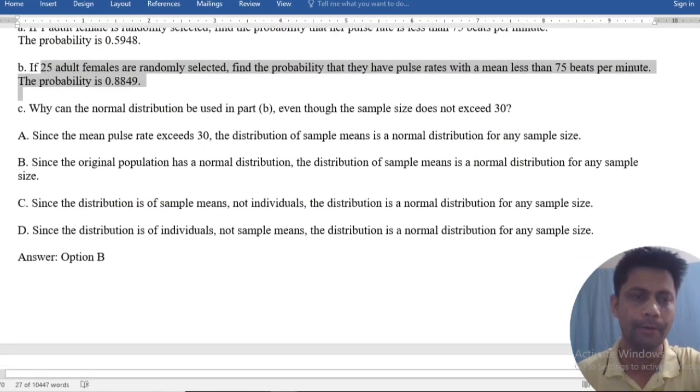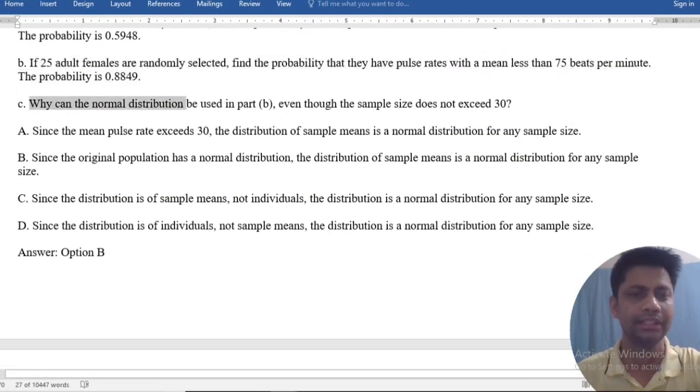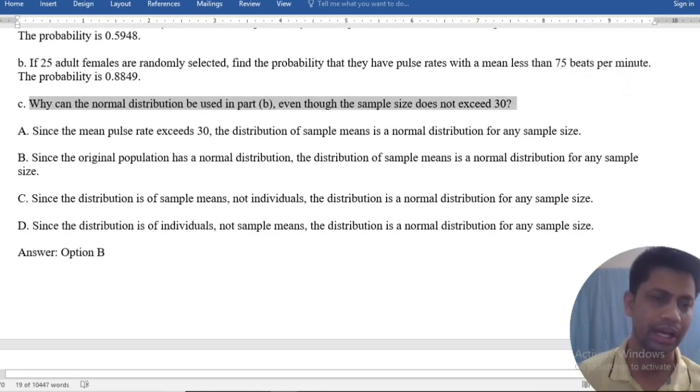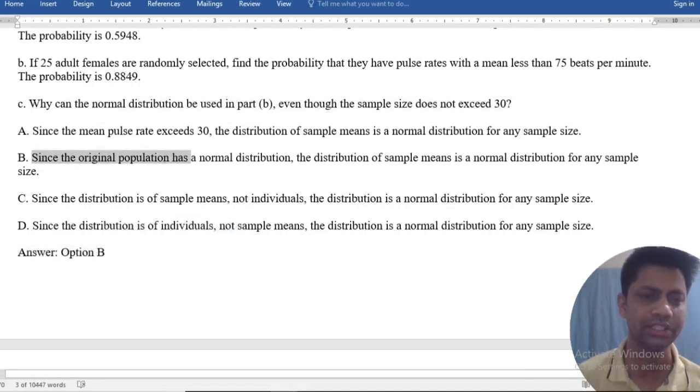Why can the normal distribution be used in part B, even though the sample size does not exceed 30? Answer is option B. Since the original population has a normal distribution, the distribution of sample means is normal for any sample size.